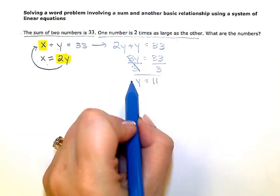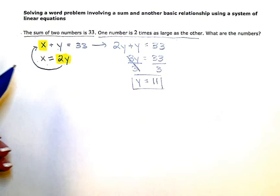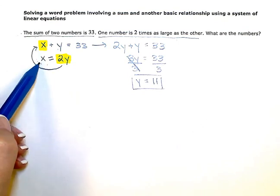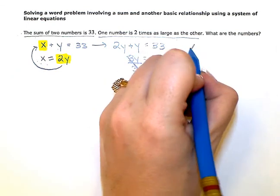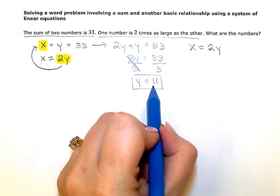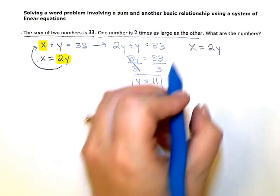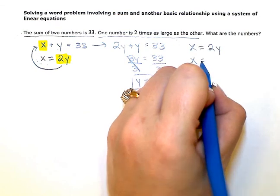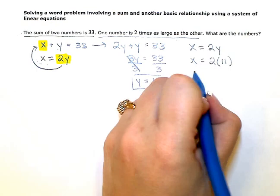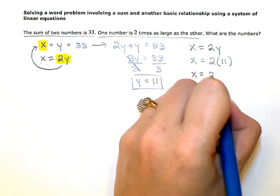So I know one of my numbers is 11. Now I just need to figure out the other number. I'm going to use this bottom equation here. Really I could use either one, but I'm just going to use this bottom one since it's already set up in x equals form. So I know that x will be equal to 2y. And since I know what y is, y is 11, I can just substitute 11 in place of y. So x is equal to 22.